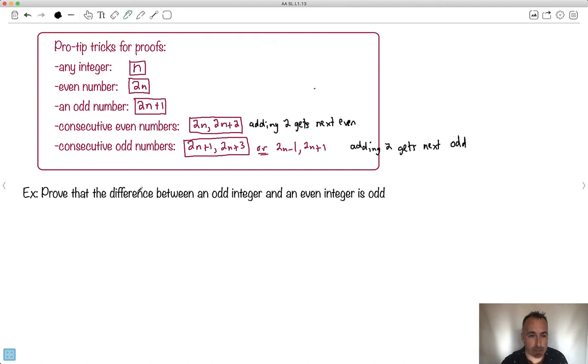So let's use this. Let's prove that the difference between an odd integer and an even integer is odd. Well, that sounds a bit confusing. So let's first take a look and let's maybe set some conditions. I need an odd integer. So let 2n plus 1 be any odd integer. Any odd integer will be 2n plus 1.